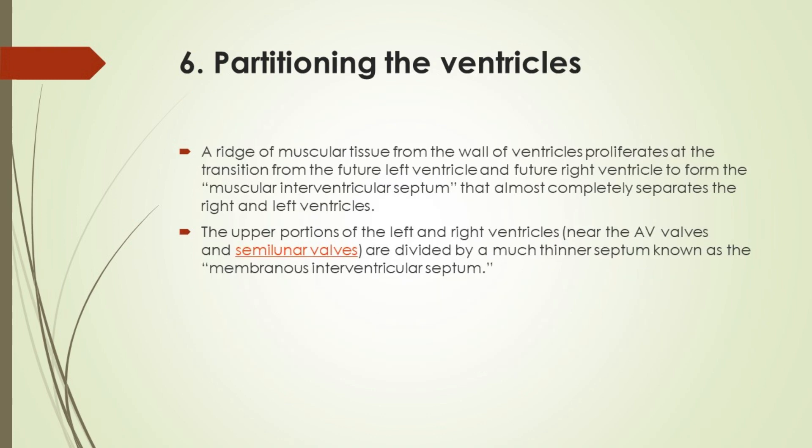Partitioning the ventricles: A ridge of muscular tissue from the wall of the ventricles proliferates at the transition from the future left ventricle and future right ventricle to form the muscular interventricular septum, which almost completely separates the right and left ventricles. The upper portions of the left and right ventricles, near the AV valves and semilunar valves, are divided by a much thinner septum known as the membranous interventricular septum.